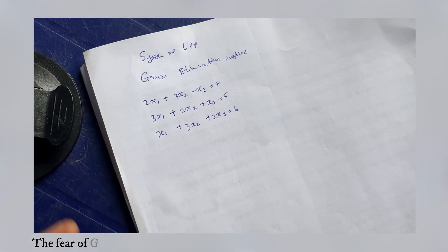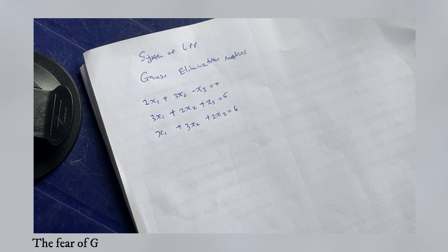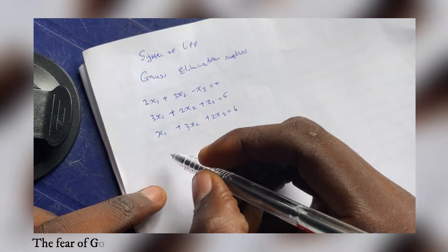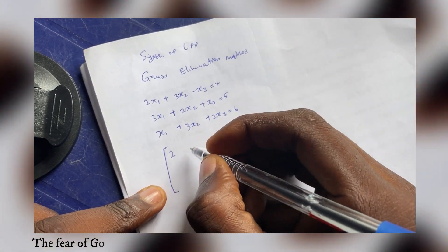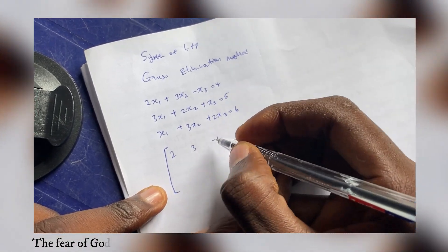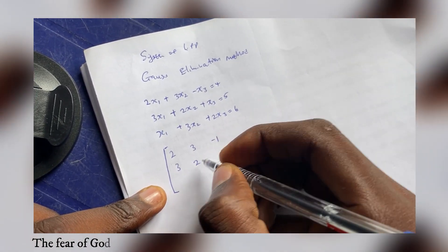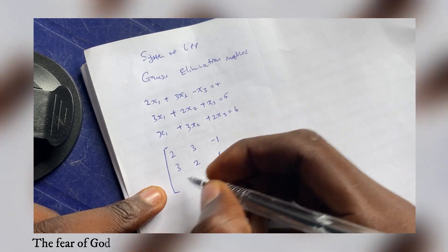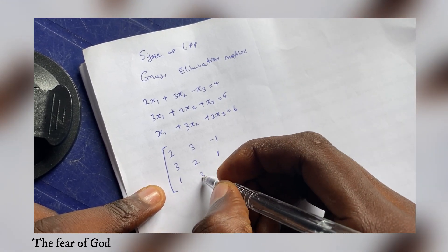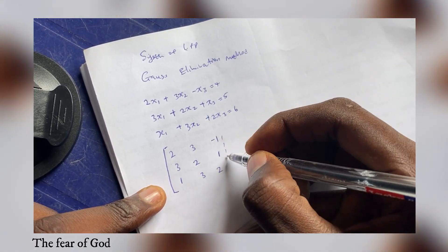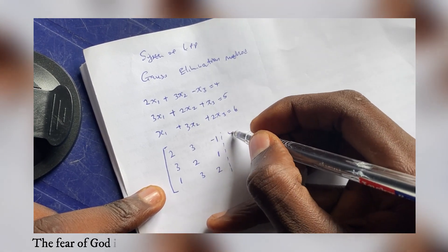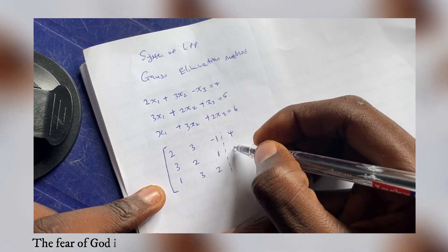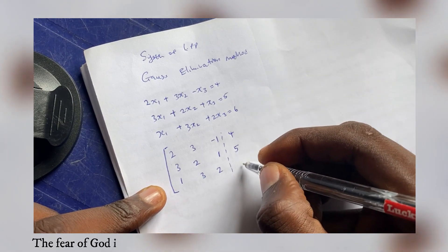With this method, all you have to do is convert our system to an augmented matrix. We have the coefficient matrix [2, 3, -1; 3, 2, 1; 1, 3, 2] and we augment it with the solution column [4, 5, 6].